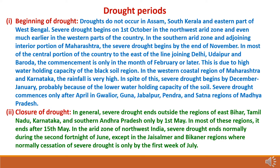Drought periods — beginning of drought. Droughts do not occur in Assam, South Kerala, and the eastern part of West Bengal. Severe drought begins on 1st October in the north-west arid zone and even much earlier in western parts of the country. In the southern arid zone and adjoining interior portions of Maharashtra, severe drought begins by the end of November. In most of the central portion of the country to the east of the line joining Delhi, Udaipur, and Baroda, commencement is only in the month of February or later, due to the high water-holding capacity of the black soil region. In the western coastal region of Maharashtra and Karnataka, where rainfall is very high, severe drought still begins by December or January, probably because of the lower water-holding capacity of the soil.